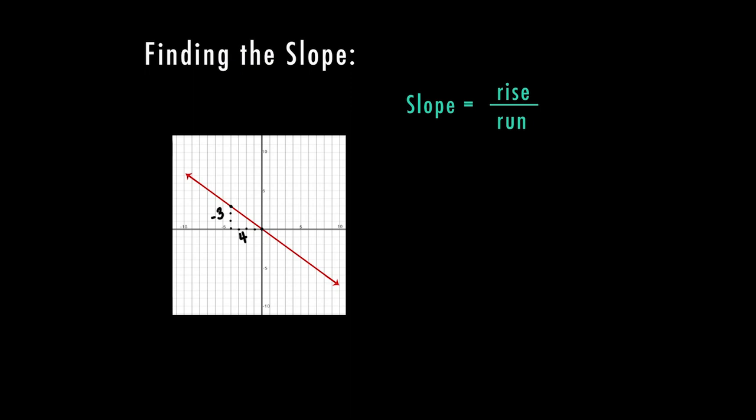So now I can fill out my slope, which is rise over run. So my rise was negative three, and my run is four. So my slope is negative three fourths.